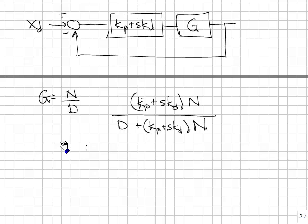And the closed loop characteristic equation is d plus the quantity kp plus skd times n equals 0, which is the same characteristic equation as we had using the differential form.